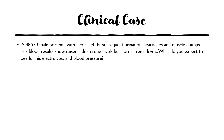To finish, here is a short clinical case. A 48-year-old male presents with increased thirst, frequent urination, headaches, and muscle cramps. His blood results show raised aldosterone but normal renin levels. The patient is presenting with classical signs and symptoms of Conn's syndrome, and the expected triad for his electrolytes and blood pressure would be hypernatremia, hypokalemia, and hypertension.